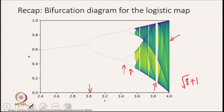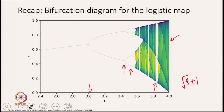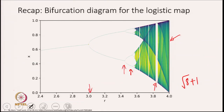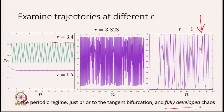Now that we have reminded ourselves of this bifurcation diagram for the logistic map, let us see what varying r does. When r = 1.5, a trajectory of the system gives you a period-1 orbit. At r = 3.4, a period-2 orbit is stable. At r = 4, we have an orbit that goes all over the interval — this is an aperiodic orbit because there is no stable periodic orbit. Such dynamics, which completely covers the interval, is often called fully developed chaos.